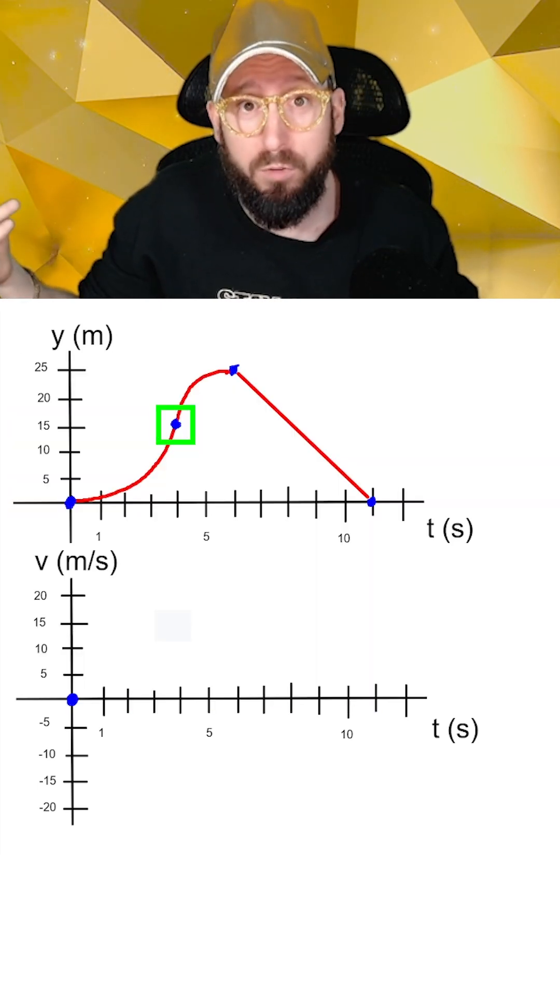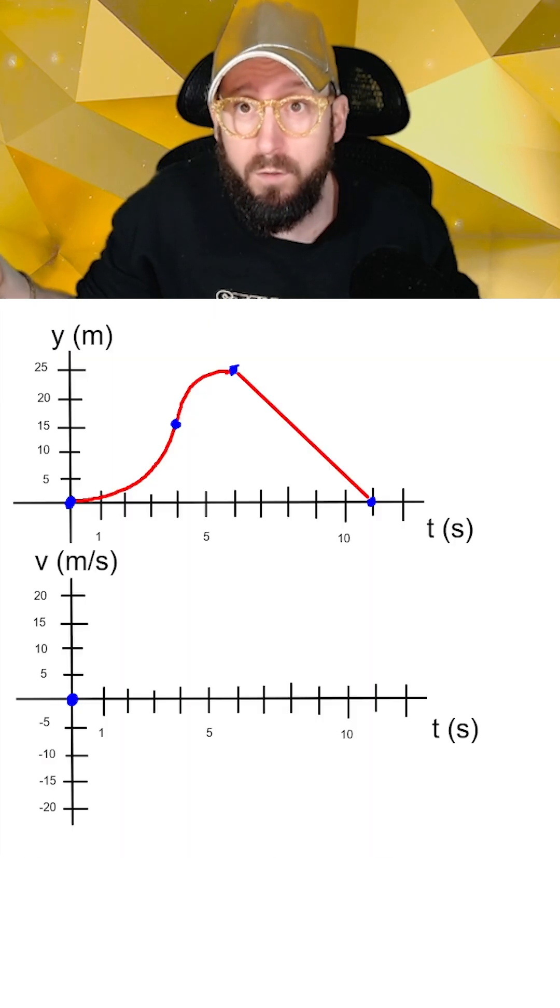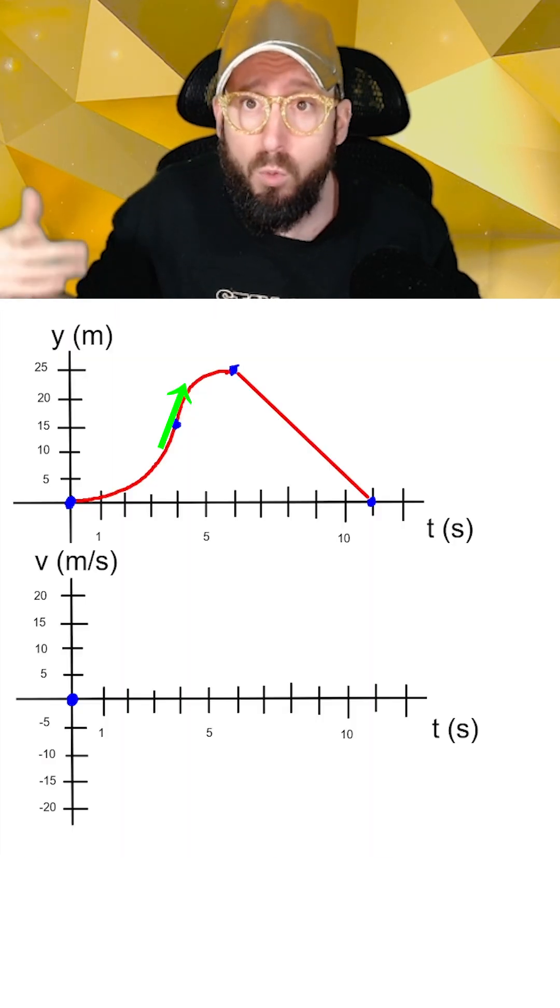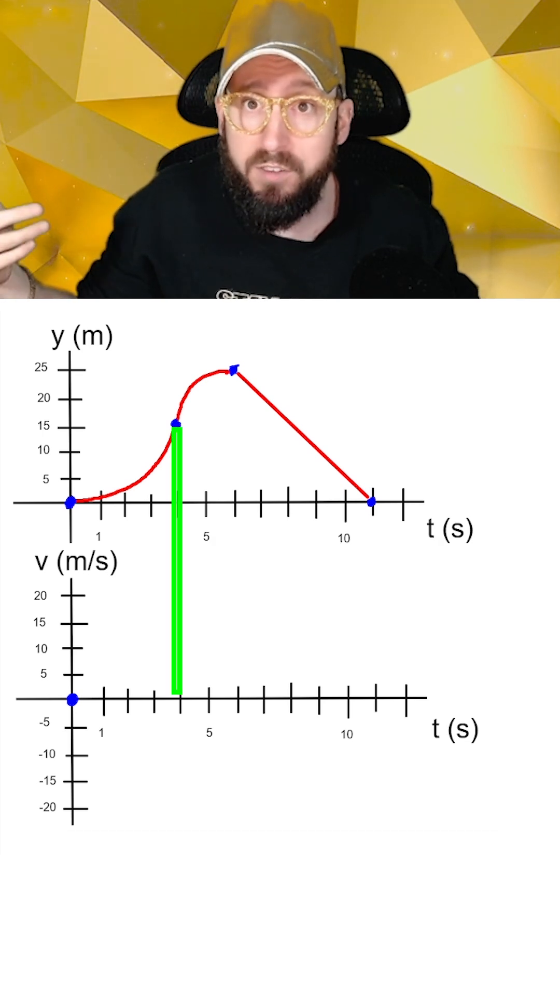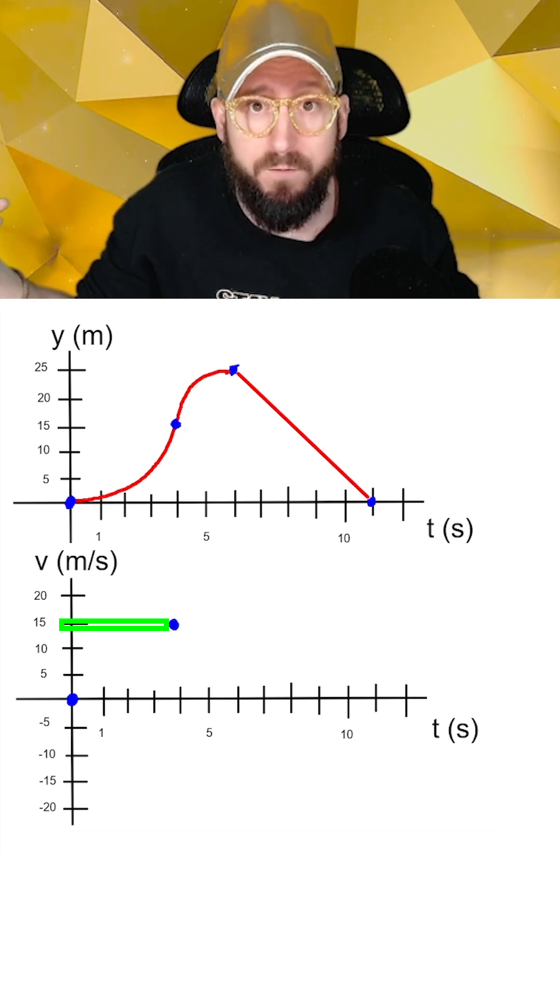Going to the next critical time point when t equals four and the rocket engines have run out of fuel, we notice that the slope is now positive, which we can approximate as a positive 15 meters per second. So on our velocity graph at t equals four, we're going to put a dot at v equals 15.